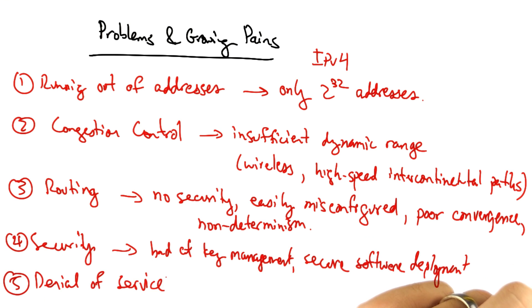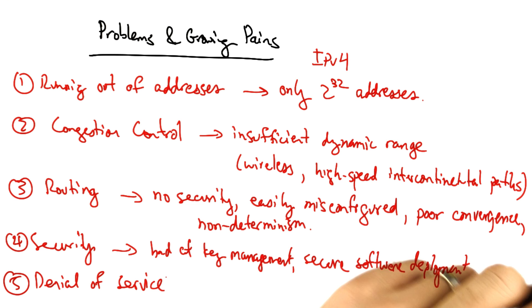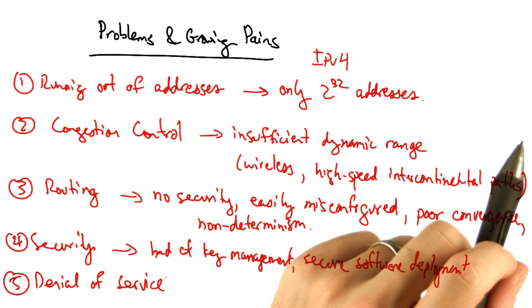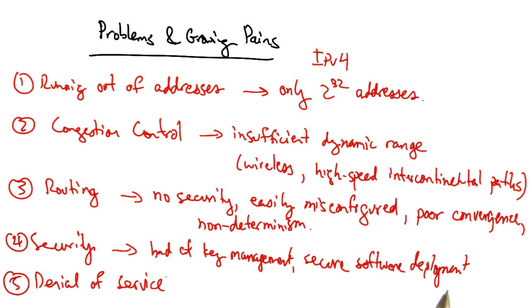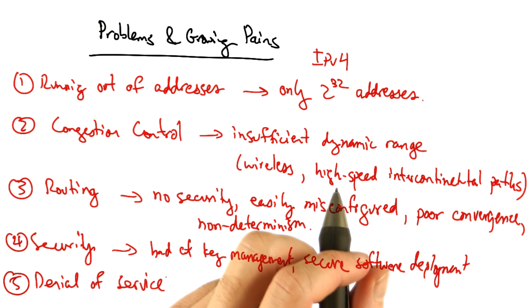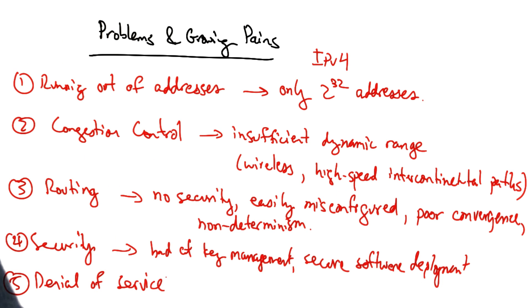The fifth major problem is denial of service. The internet does a very good job of transmitting packets to a destination, even if the destination doesn't want those packets. This makes it easy for an attacker to overload servers or network links to prevent the victim from doing useful work. Distributed denial of service attacks are particularly commonplace on today's internet.